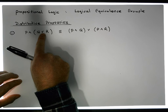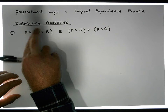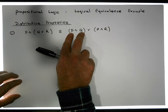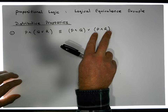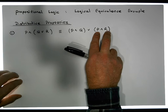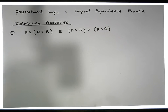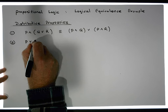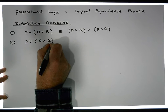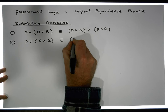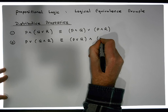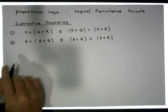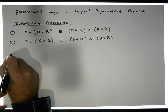What I'm saying is that if you OR a proposition Q with another proposition R and then AND the result with P, that's equivalent to ANDing P with Q first, then ANDing P with R, and ORing both results. We'd also like to show the second version: P OR (Q AND R) is logically equivalent to (P OR Q) AND (P OR R). This video will show both of them.